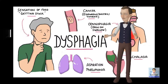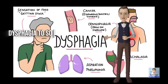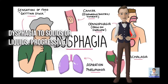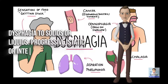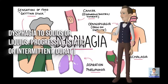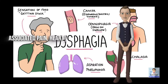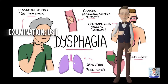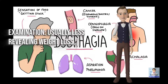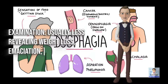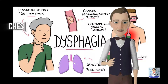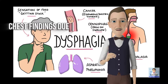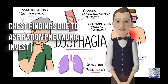Diagnosis: history. Key questions include whether dysphagia is to solids or liquids, whether it is progressive, static, or intermittent, its duration, associated pain, heartburn, or weight loss. Examination is usually less revealing but may show weight loss, emaciation, and chest findings due to aspiration pneumonia.